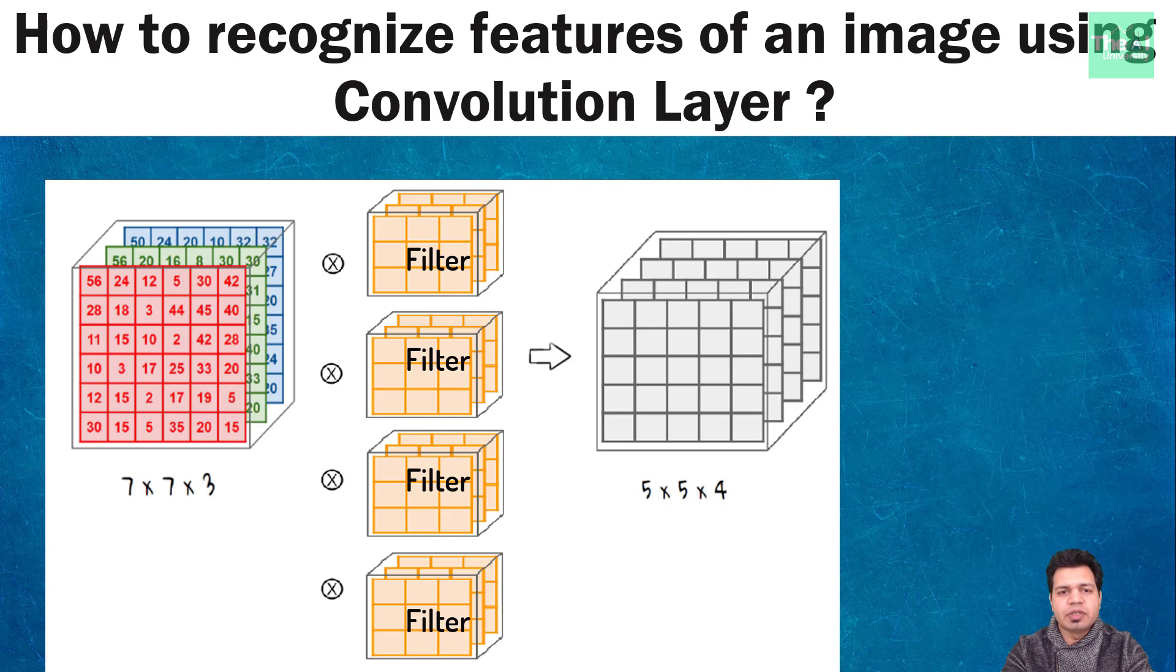We are using four such filters to detect the feature of the input image. Then we apply convolution operation for each filter or feature detector. The resultant output would be 5 by 5 by 4 image. This output image has height of 5 pixel and width of 4 pixel. So height and width of the image got changed after applying convolution operation.